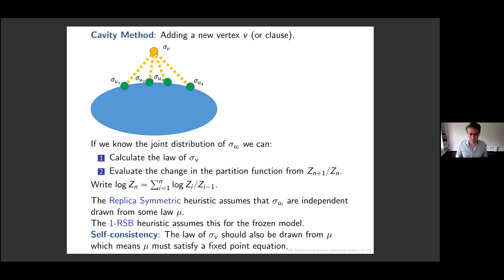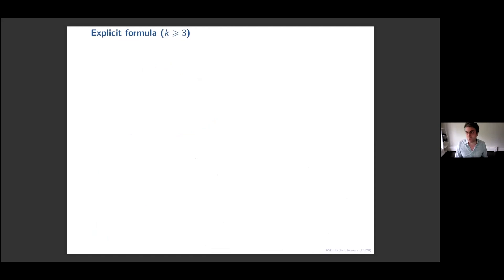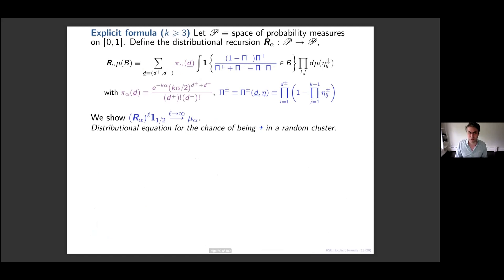There's one more thing we don't know: when we add a new variable v, it shouldn't be special — its marginal should also be drawn from mu. But we said its law could be computed in terms of the law of its neighbours, and this says that mu must satisfy some self-consistency relation — in particular it will be the solution of some fixed-point equation. Let me tell you what this means in terms of the random k-SAT model. The following slide is quite complicated; I just want to make the point that the predictions and thresholds are very explicit.